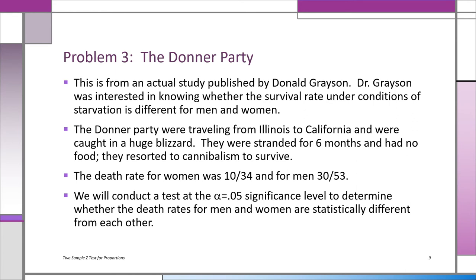They were traveling from Illinois to California, had a huge blizzard. There's no food for months, and they actually didn't kill each other—they were nice to each other. But if somebody died, they had to resort to cannibalism. And we know the death rate for the women was 10 out of 34. 10 out of 34 women died, and for the men it was 30 over 53. Now you can see why you need a statistical test. You can't just simply say that more men died—it may just be chance variation. So we're going to test at the 0.05 significance level to see whether the death rates for men and women are statistically different from each other.